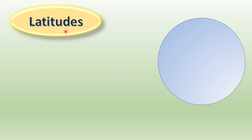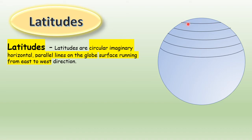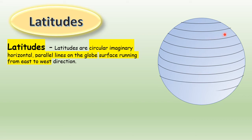Latitudes are circular imaginary horizontal parallel lines on the globe surface running from east to west direction. These lines are drawn horizontally and they run parallel to each other. Parallel means they are together but they don't have any meeting point — they don't cross each other.